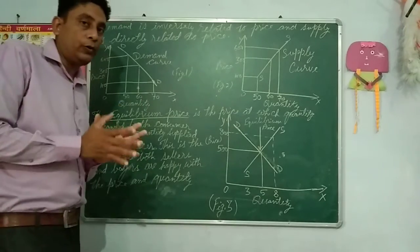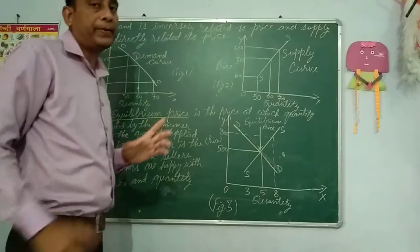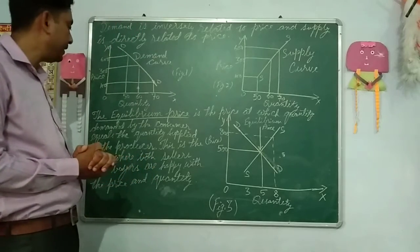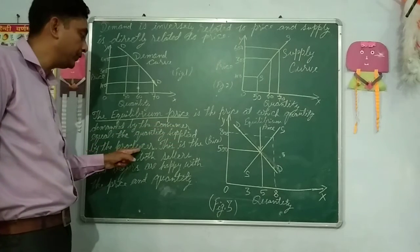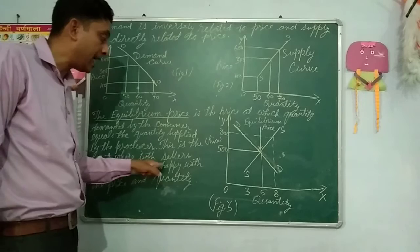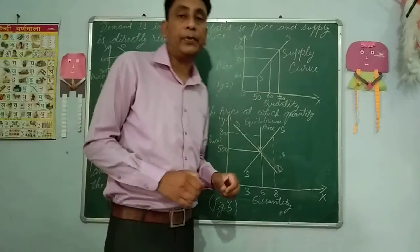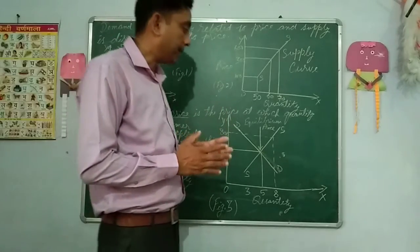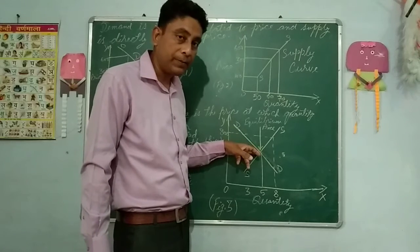Now the equilibrium price. When we combine these two figures, we get the equilibrium price. The equilibrium price is the price at which the quantity demanded by the consumer equals the quantity supplied by the producer. It is the point where both sellers and buyers are happy with the price and quantity — the optimum point where both suppliers and consumers become satisfied.